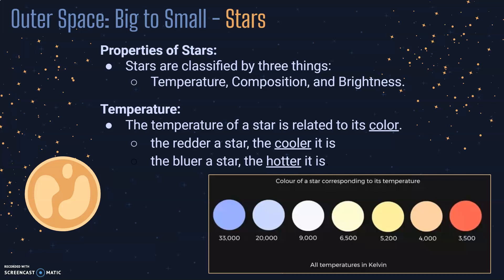The temperature of a star is related to its color. For example, if you look at the picture down here at the bottom, the sun is a yellow star, so it's kind of in the middle of the range. These temperatures are in degrees Kelvin because the numbers are pretty big. As you get closer to the redder end, the temperature decreases. As you get closer to the bluer end, the temperature increases — sort of the opposite of what we think of with water faucets, where red is hot and blue is cold. But that's not the case with stars.